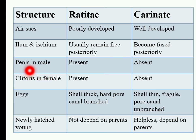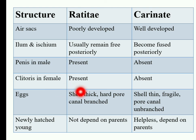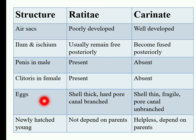In Ratites birds, the penis in males is present, and the clitoris in females is also present. In Carinates birds, the penis in males is absent, and the clitoris in females is also absent. Regarding eggs, Carinates birds lay smaller eggs.